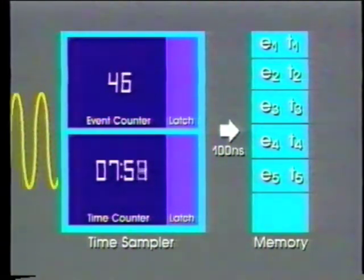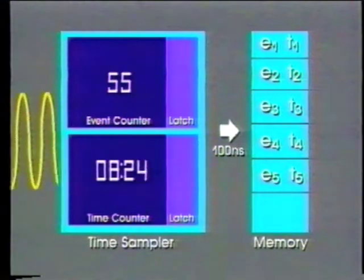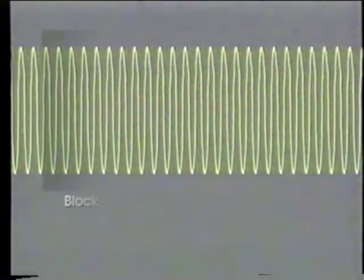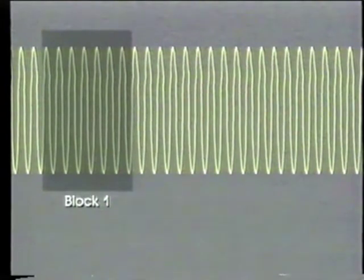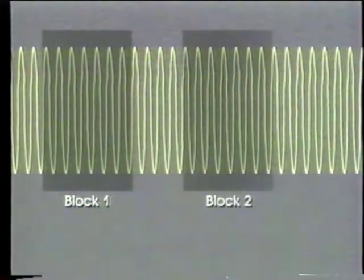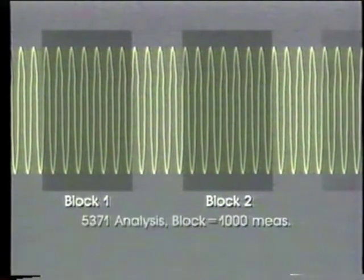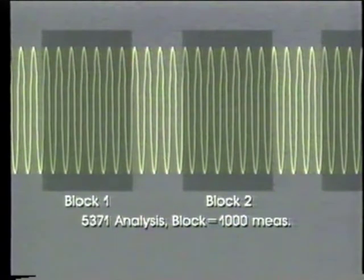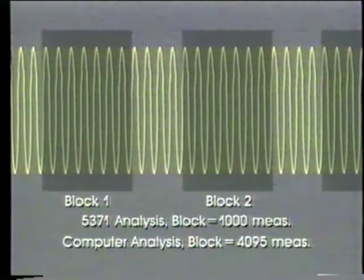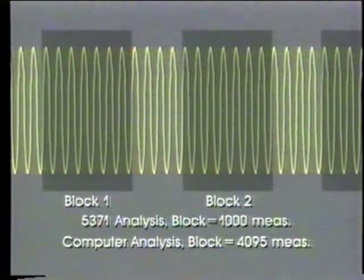The 5371 gathers event and time data in this way until an entire measurement block is taken, then stops and analyzes the data. A block consists of a continuous sequence of measurements — up to 1,000 when using the 5371 alone, and up to 4,095 when using a computer to analyze the data.